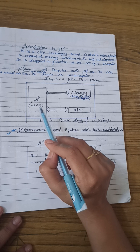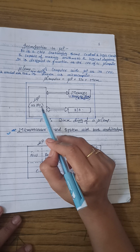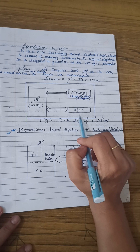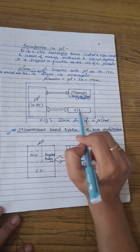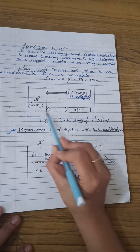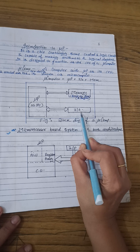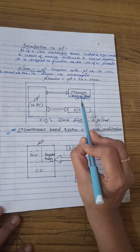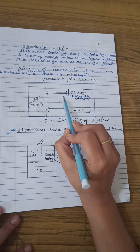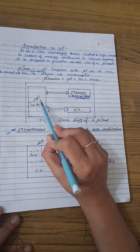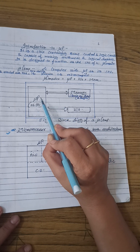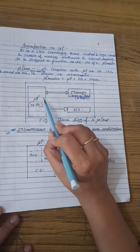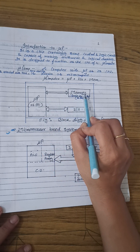उसके लिए हमें कुछ peripheral devices की need है, यानि peripheral devices means the hand, the leg, etc., as in a human body. So, यहाँ पर processor के साथ we need some sort of input and output devices. जब आप microprocessor के साथ input-output devices attach कर देंगे, और साथ में, because microprocessor में जो भी काम होगा, उसको कहीं ना कहीं memorize किया जाना पड़ता है. So, उसके लिए we need a memory.